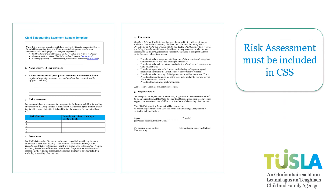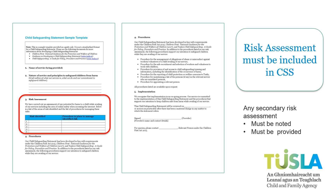You should also remember that the risk assessment is part of your child safeguarding statement — it must be included in the body of the statement. Services can include an amalgamated list of the main risks identified and develop a more detailed secondary risk assessment document. Where a secondary risk assessment document is developed, this must be noted on the CSS and provided with the CSS whenever it is requested.